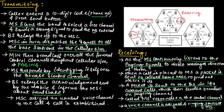The nearby base station will relay the number to the mobile switching center. The mobile switching center in turn dispatches the request to all base stations available in the mobile cellular system. The mobile identification number is then broadcasted over the forward control channel throughout the cellular system. This process is known as paging.